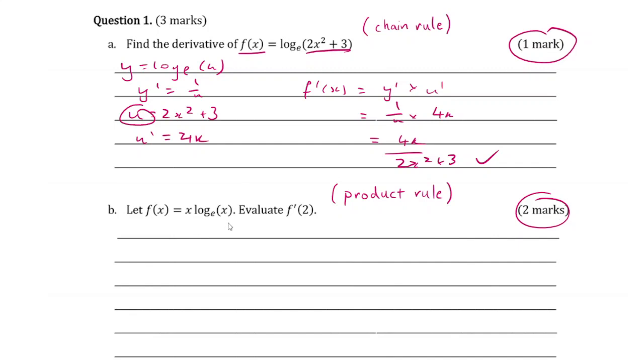The next question for two marks asks us to calculate f dash 2, where f(x) is equal to x multiplied by log_e of x. So we rewrite this as y equals uv, u is equal to x.